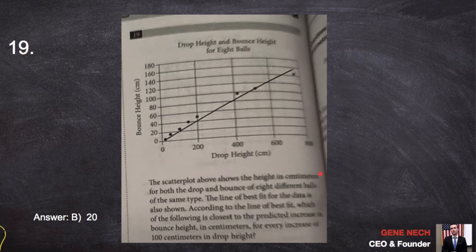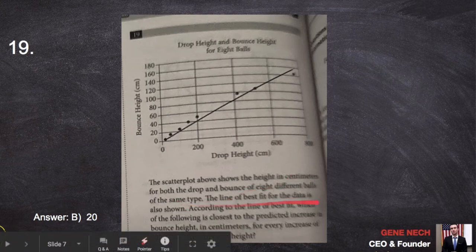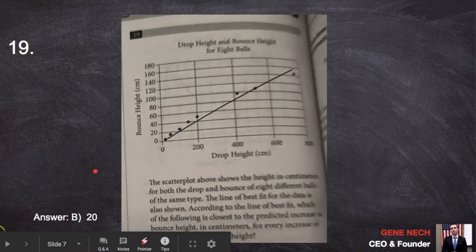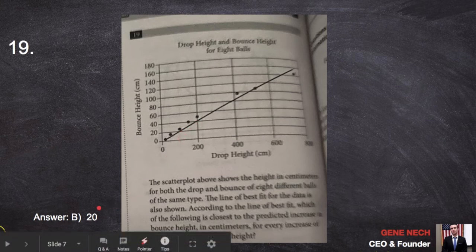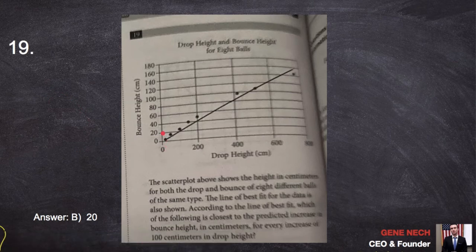Number 19. Scatter plot. Height in centimeters for both the drop and bounce. Best fit data. According to the line of best fit, which of the following is the closest to the predicted increase bounce height over 100? So here's 200. Over 200, we increase 40. So it makes sense that over 100, we need to increase only 20. Answer B. This is a slope question. Rise over run. Increase over run. Rise over run.